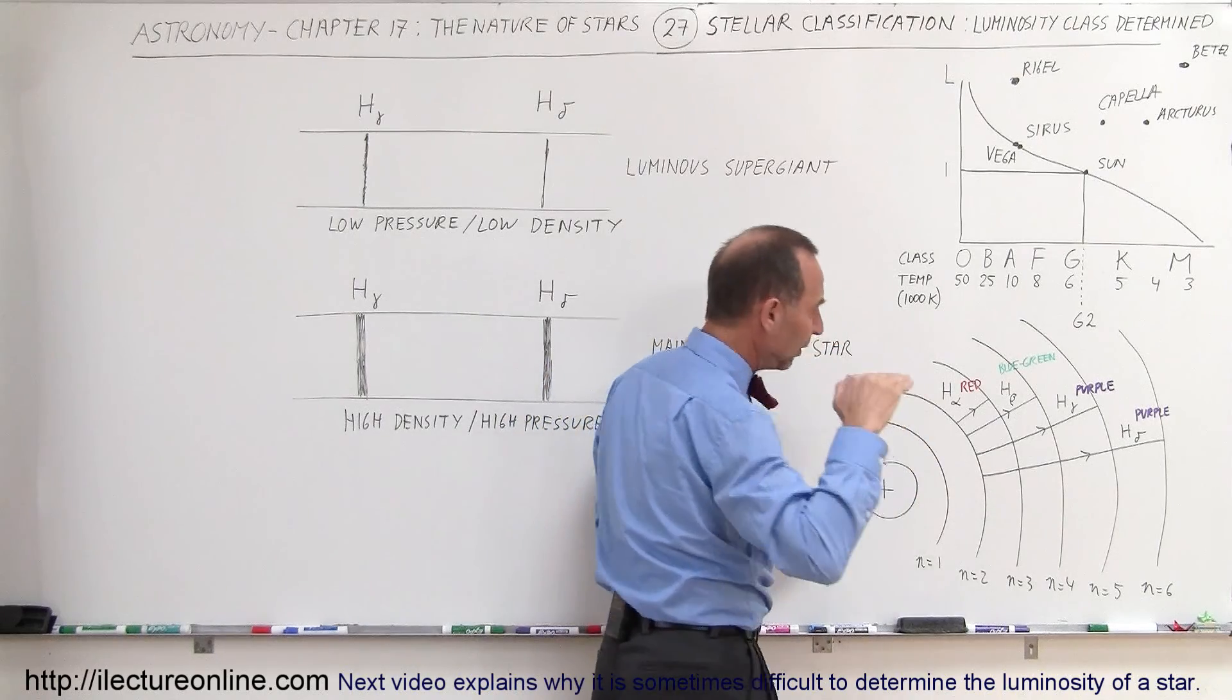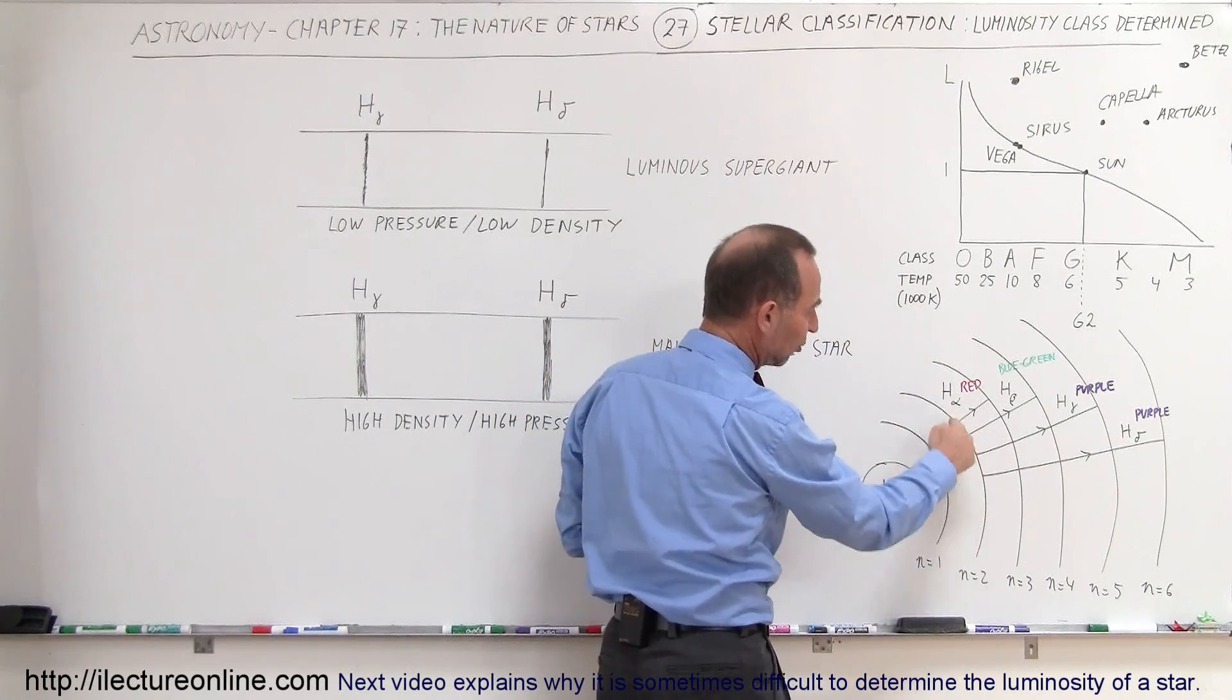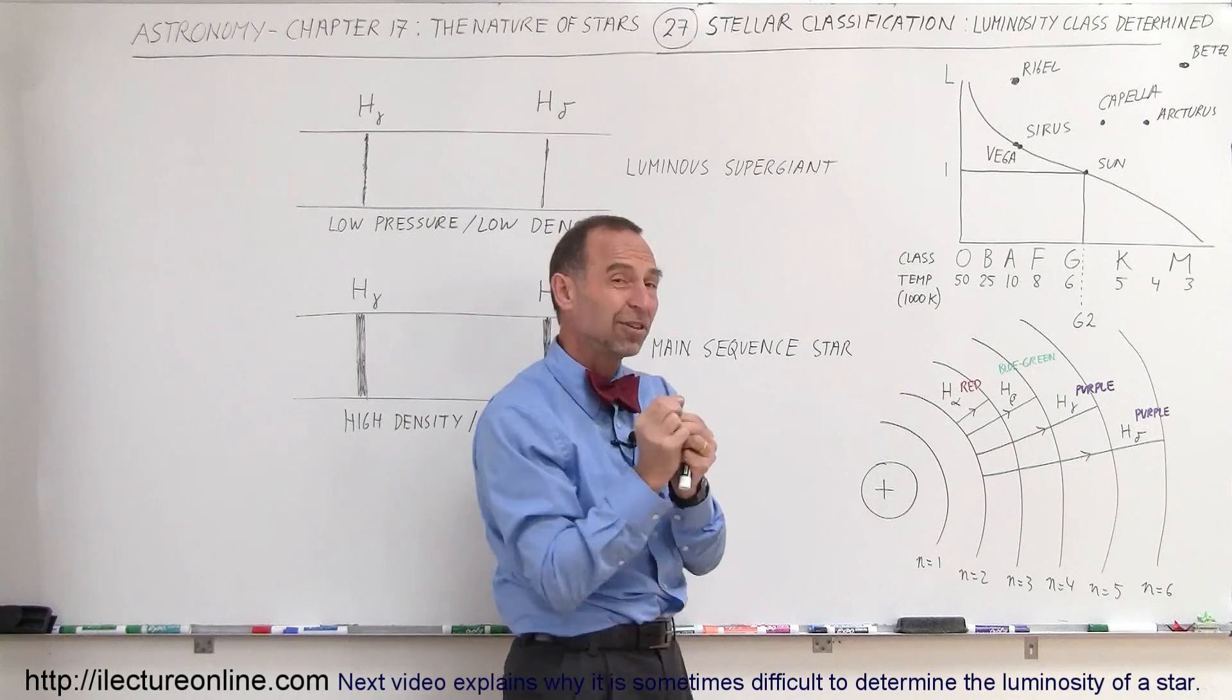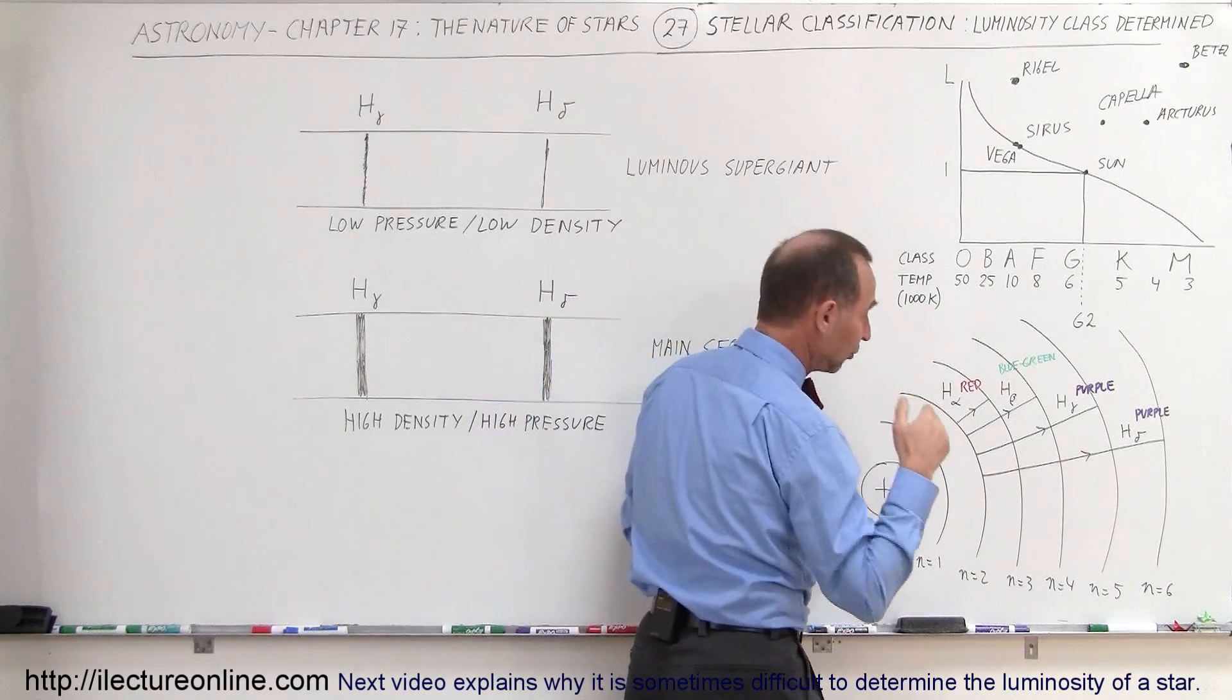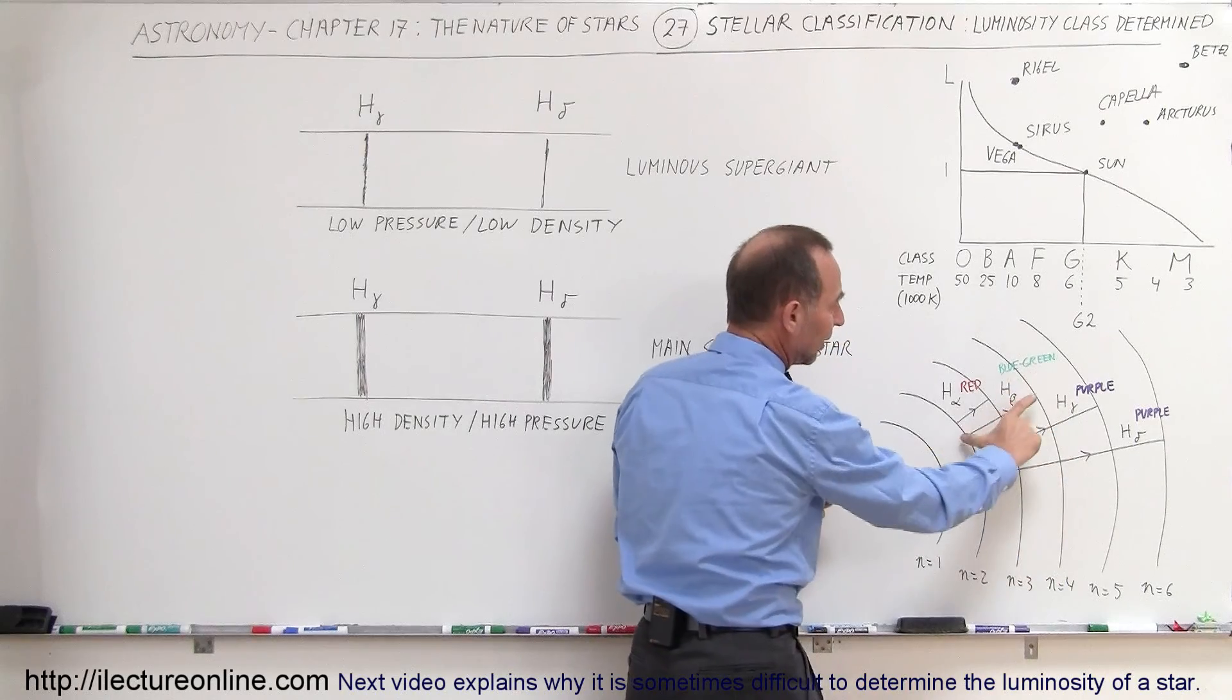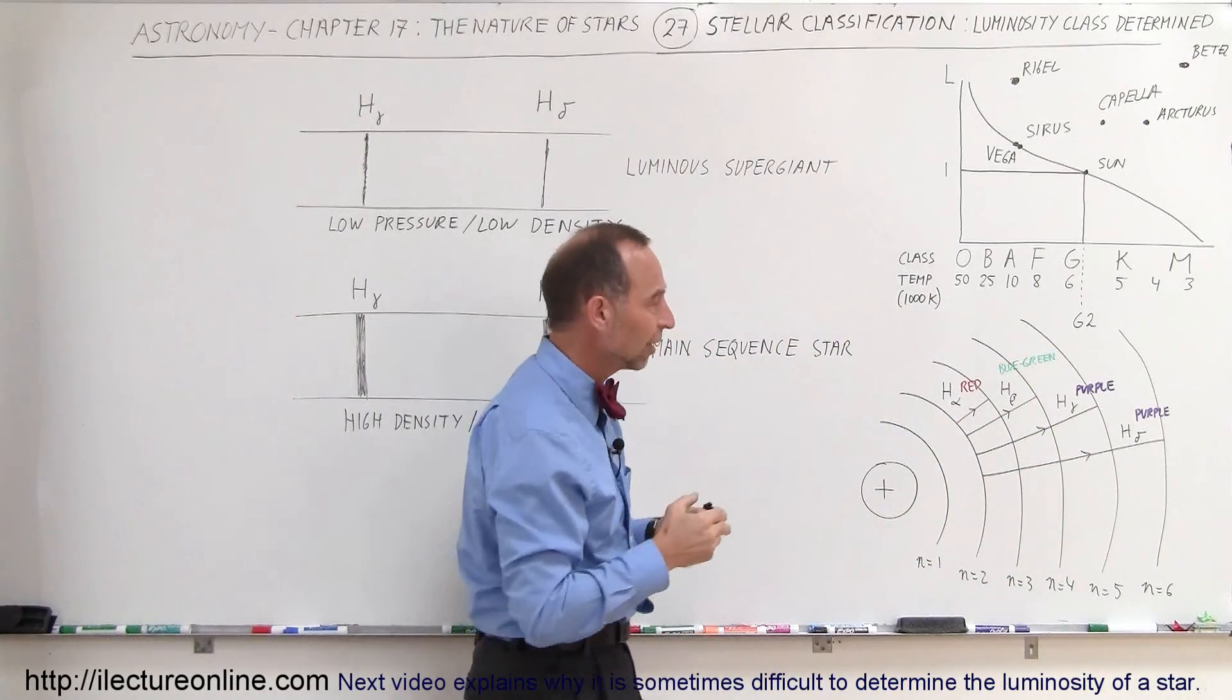For example, when a photon comes in and hits an electron at the second energy level and causes a jump up to the third level, it will absorb a red color wavelength of 656.3 nanometers. So that color is simply absorbed. If a photon hits it with the exact amount of energy and causes a jump to the fourth level, then it absorbs kind of a blue-greenish color, and that color is missing.